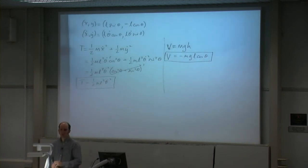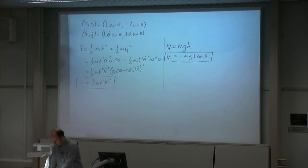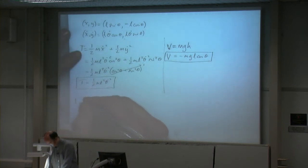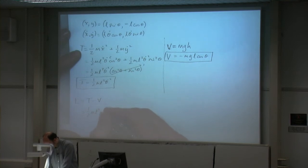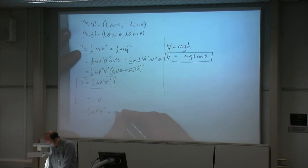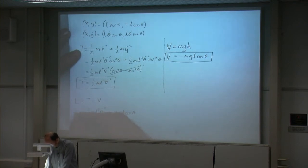We've got T and we've got V. There's no damper in this equation, so R = 0. The next step is to find the Lagrangian L = T - V. So we have L = ½m L² theta-dot² + mgL cosine theta.